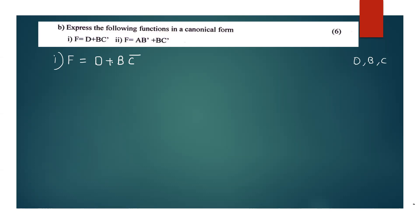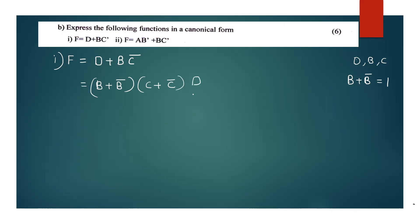These two terms are summed. In the first term, b and c are missing. We want to apply the postulate that a variable plus its complement equals 1. So we substitute this identity. Now d is missing in the second term, then b and c are missing. We can keep expanding here.